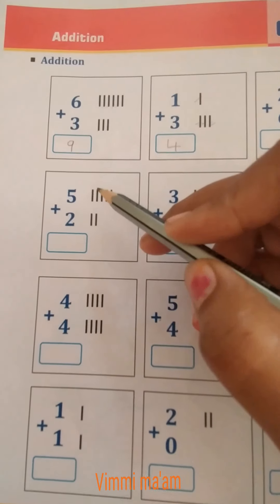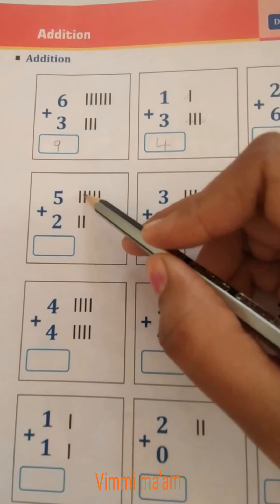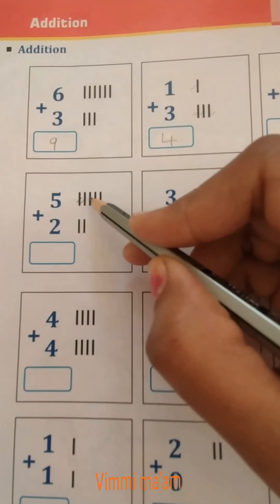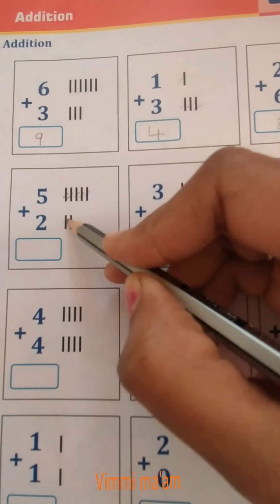Now next. 5 plus 2. We count: 1, 2, 3, 4, 5, 6, 7.